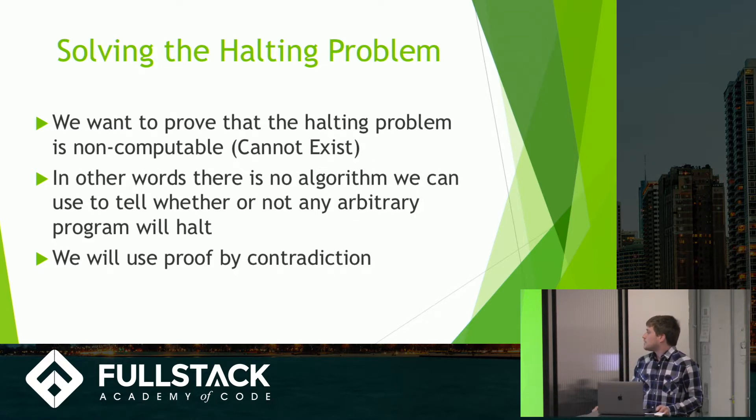So in other words, we want to show that there's no algorithm that we can use to tell whether or not any arbitrary program will halt. And to do this, we'll use a proof by contradiction, which is what Alan Turing did in 1936.